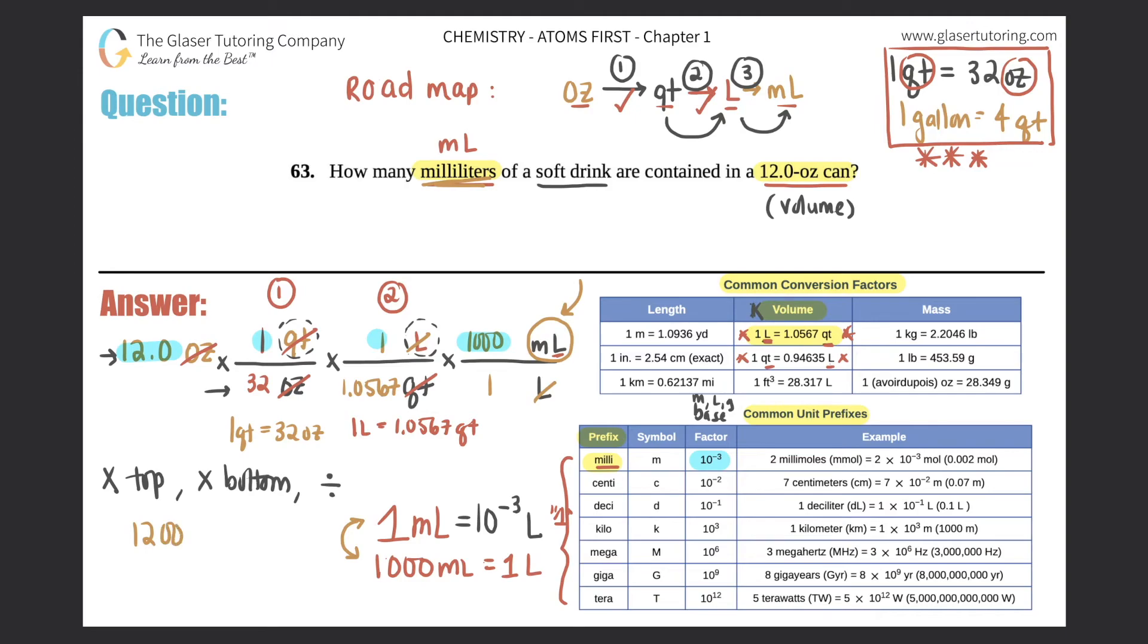Divided by - now we multiply all the bottoms - so the 32 times 1.0567 times one. Once again I skip the ones, so 32 times 1.0567, I get 33.8144. And now finally I will divide the two numbers, so 12,000 divided by 33.8144 is this huge number. I'm going to cut it off after a couple of sig figs so it's 354.878.